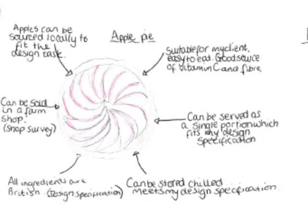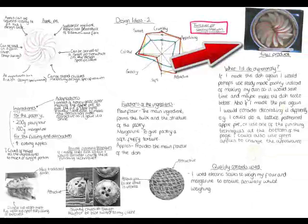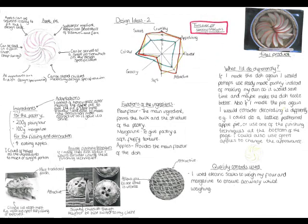If we look at this example here on the Apple Pie, they have drawn it out and annotated, and said how they're going to actually make their product this time. They've also annotated it relating to some research that they've done, also the design specification, and also the design task. This then clearly explains what they are making. They've also included a photograph of the final product, which is important to include because that is evidence that you have made it.